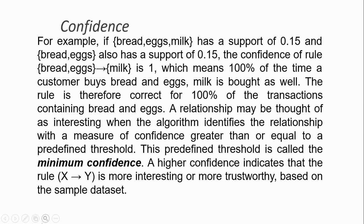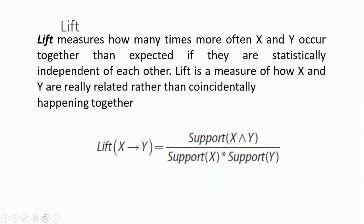A relationship may be thought of as interesting when the algorithm identifies that the confidence is greater than or equal to a predefined threshold. For example, if you want a confidence of 60%, that is useful for your business purpose — it depends on the business requirement. This predefined threshold is called minimum confidence. A higher confidence means the rule X implies Y is more interesting and more trustworthy.